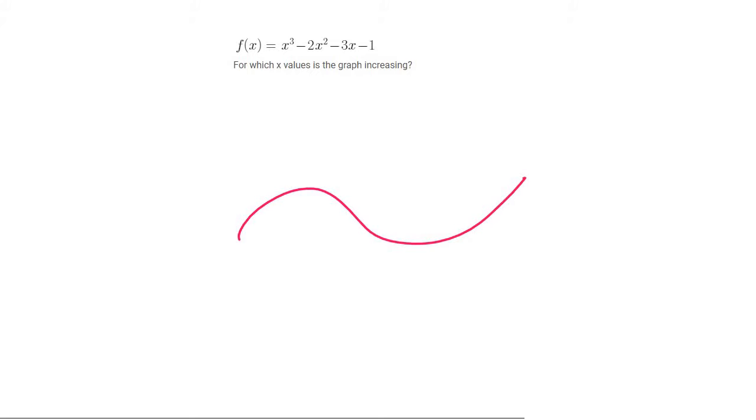If I had to draw a random graph, where would you say it's increasing? Well, it would be increasing here and here. So increasing is when the gradient is positive.